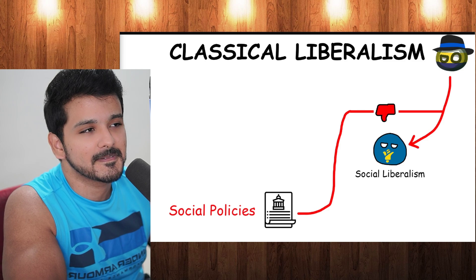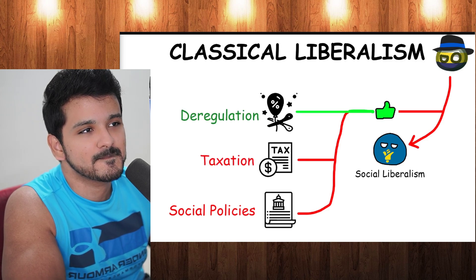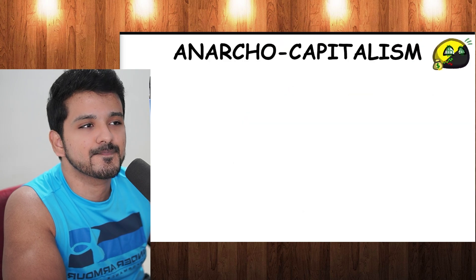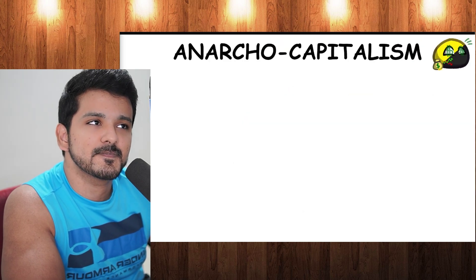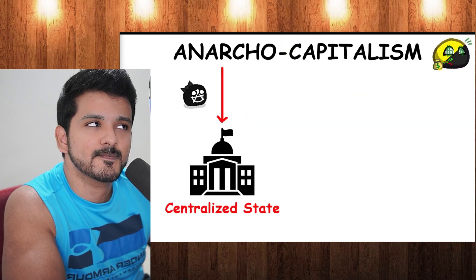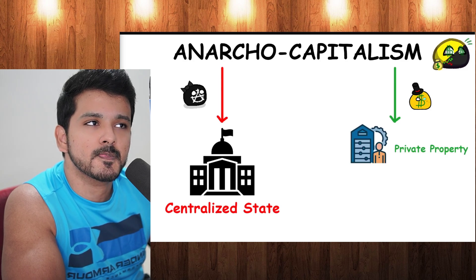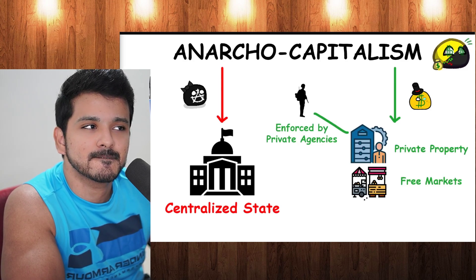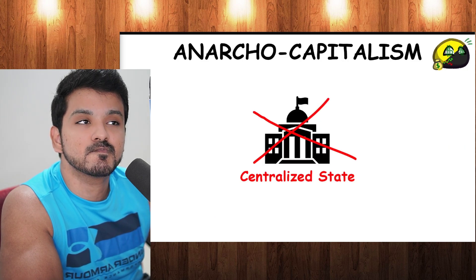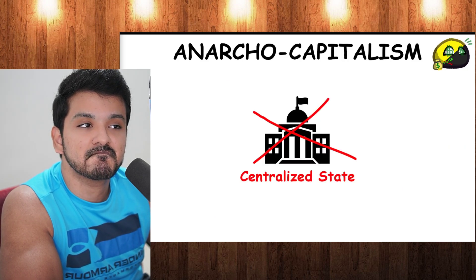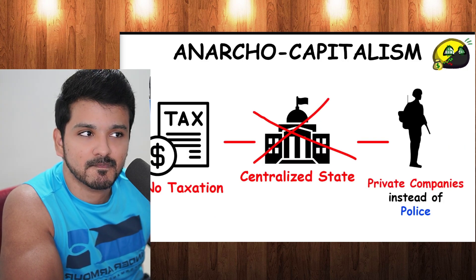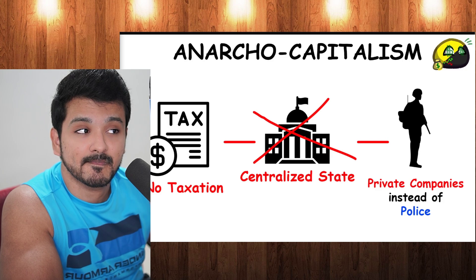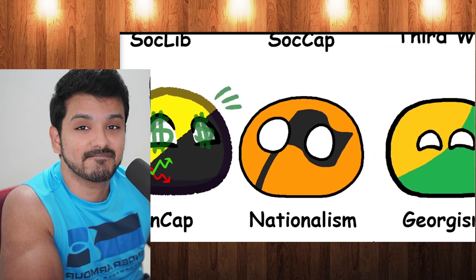If you want little government intervention, you'd be more negative about social policies and taxation, and it advocates for deregulation. Anarcho-capitalism is anarchist because it doesn't like a centralized state, and capitalist because it likes systems of private property enforced by private agencies, free markets, and self-ownership. Since no centralized state would exist, there would be no taxation, and private companies would take the role of the police.